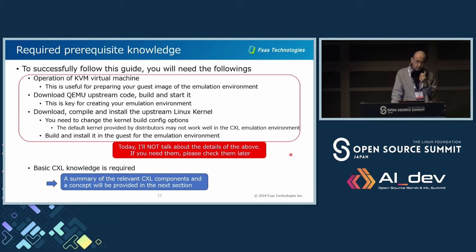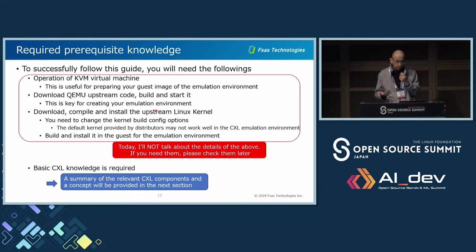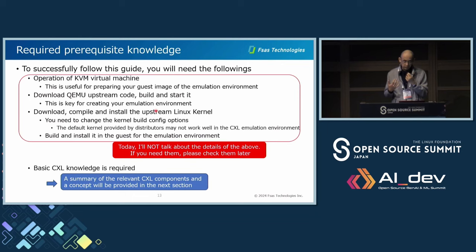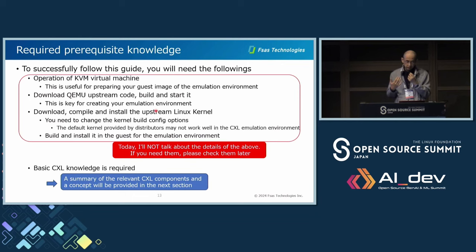To make the emulation environment, there is required prerequisite knowledge. You will need to operate a KVM virtual machine, download the QEMU upstream code, build and start it, download the compiler and install the upstream Linux kernel, and change the kernel build config options. The default kernel provided by distributors may not work well in the CXL emulation environment. You also need to build and install it in the guest side. Today I will not talk about the details of the above — please check them separately. Basic CXL knowledge is also required, and I will provide a summary of relevant CXL components and concepts in the next section.